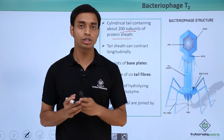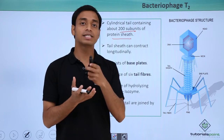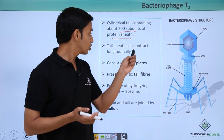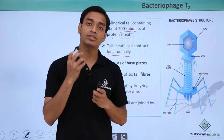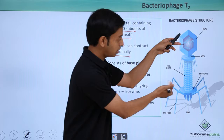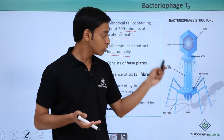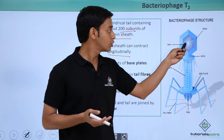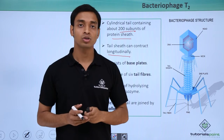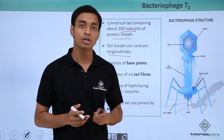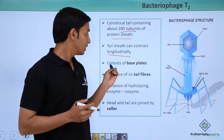A very important characteristic of bacteriophage T2 is that the tail can contract longitudinally — it can act like an injection. The tail contracts and becomes smaller, and because of this it can inject its genetic material, the double-stranded DNA, into the host organism. This is a very important characteristic provided by this type of tail.